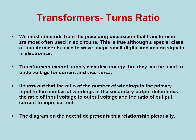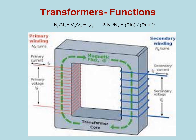Turns ratio. We must conclude from the preceding discussion that transformers are most often used in AC circuits. Although a special class of transformers is used to wave-shape small digital and analog signals in electronics, we don't see these very often. Transformers cannot supply electrical energy, but they can be used to trade voltage for current and vice versa. The ratio of the number of windings in the primary input to the number of windings in the secondary output determines the ratio of input voltage to output voltage, and the ratio of output current to input current. The diagram on the next slide presents this relationship, along with the equations.